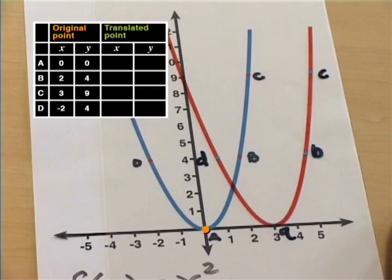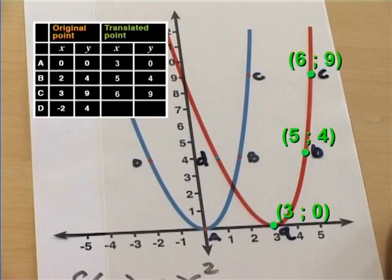Okay, so point A, which is zero and zero, is now three and zero. Point B, which is two and four, is now five and four. Point C, which is three and nine, is now six and nine. Finally, point D, which is minus two and four, is now one and four.